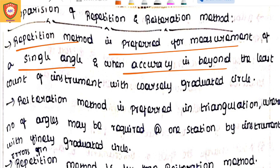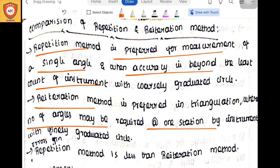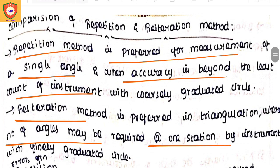When compared to the least count value, the accuracy value of the Repetition Method is very high. The Reiteration Method accuracy value is comparatively low. So we use both methods — the Repetition Method and the Reiteration Method — to measure the horizontal angle and vertical angle.